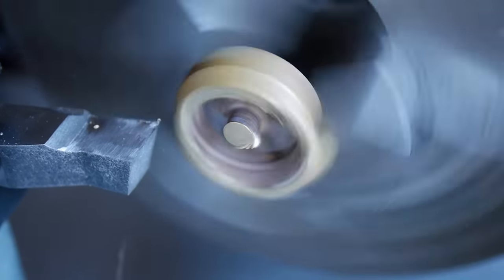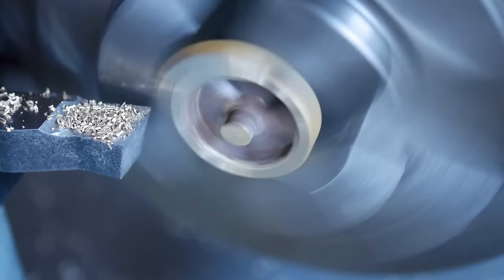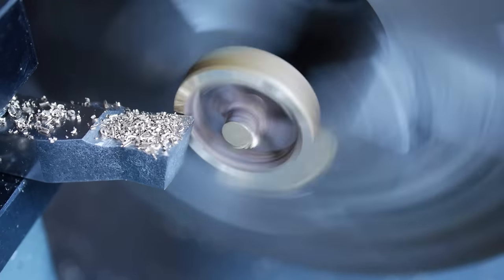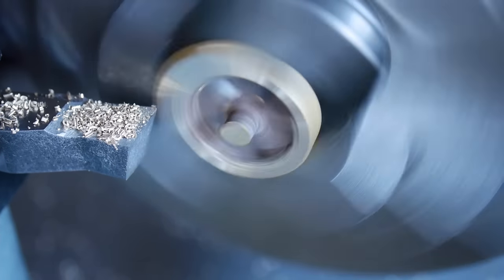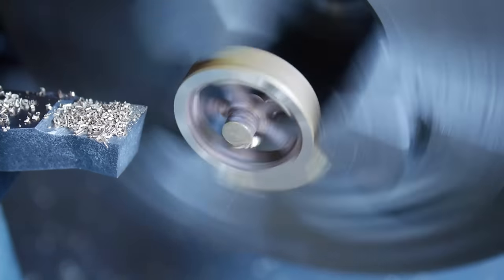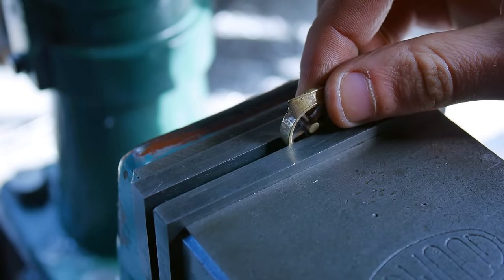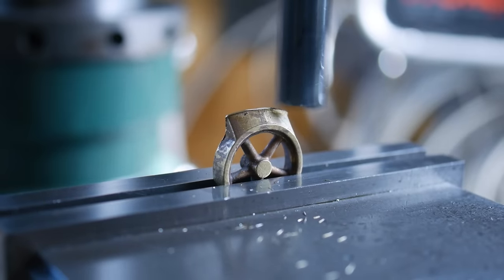I put the flywheel into my larger lathe to remove the support material but leaving the stub in the middle to provide me with a way to grip the flywheel in the watchmaker's lathe. I then remove the majority of the remaining material using the milling machine.